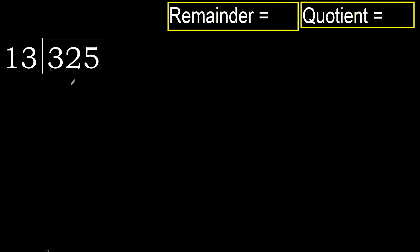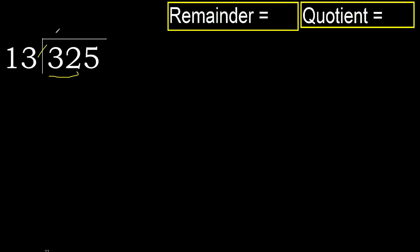325 divided by 13. 3 is less, therefore next. 32 is not less, therefore work with 32. 13 multiplied by which number is nearest to 32, but not greater?